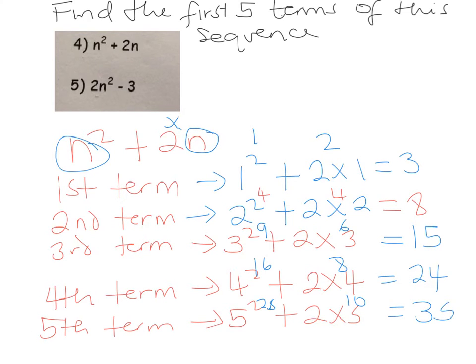So the first five terms of this quadratic sequence are 3, 8, 15, 24, and 35.